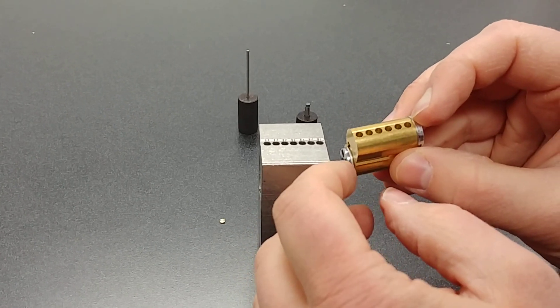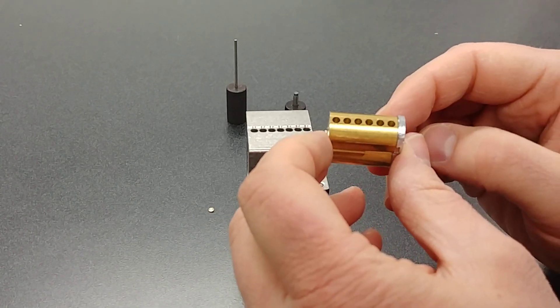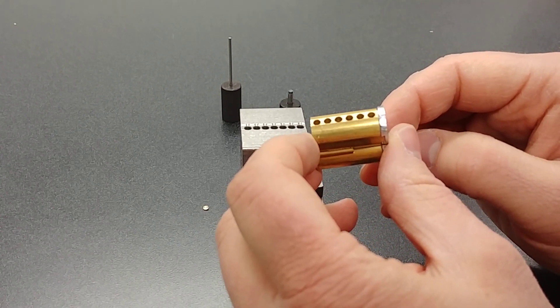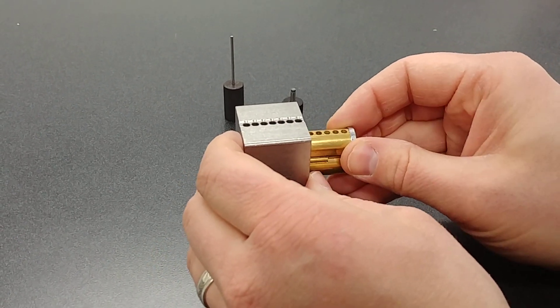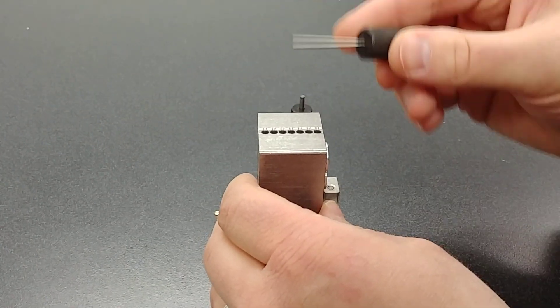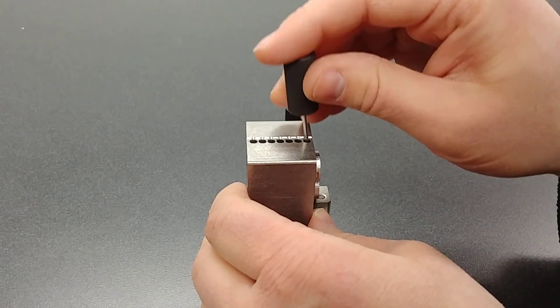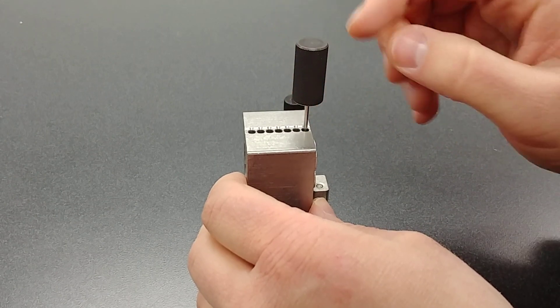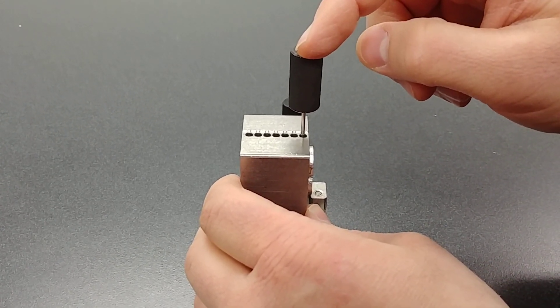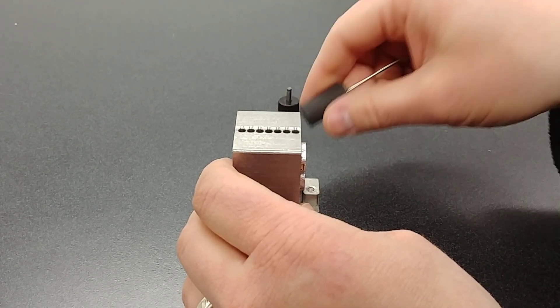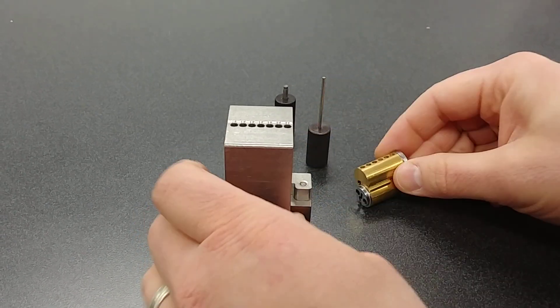Now, to either eject all of the pins out of a core to decode, or just to remove to re-key, when you have the core in here, you're going to want to take this ejector pin. You're going to stick it in chamber by chamber, and you're going to just hit it with a mallet, a rubber mallet, or a hammer, and you're going to push the pins down inside this chamber here.